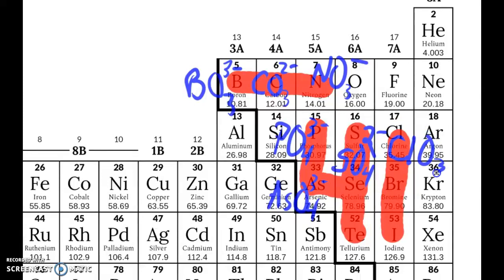So ClO3- is chlorate, BrO3-, same charge, bromate, and iodate, IO3-. So that's the idea there.